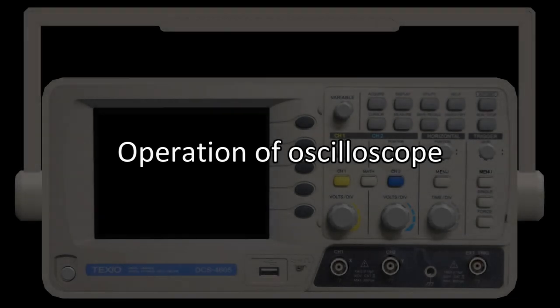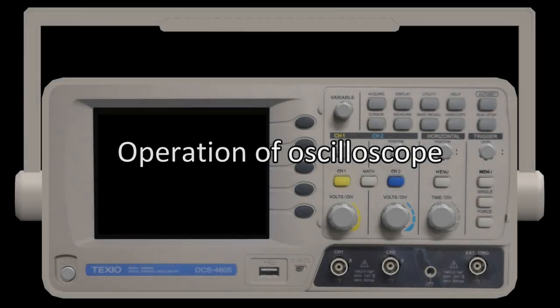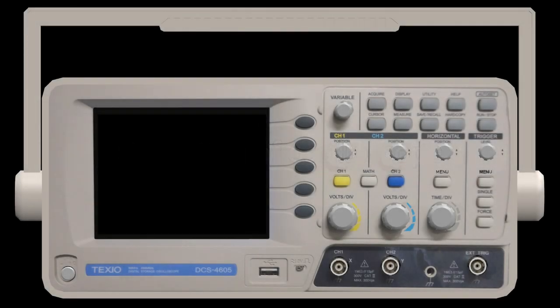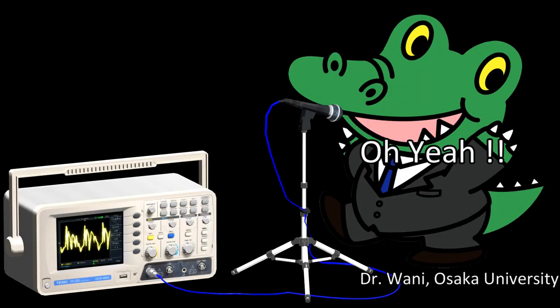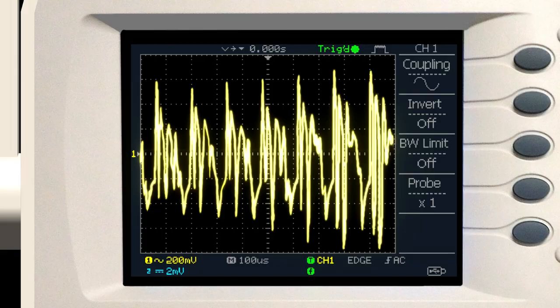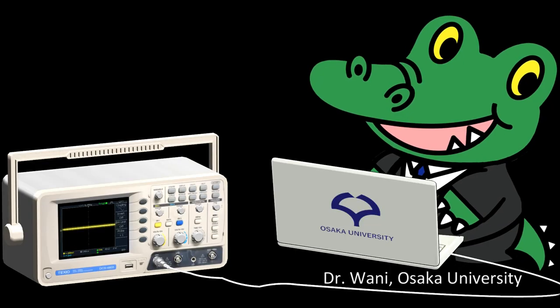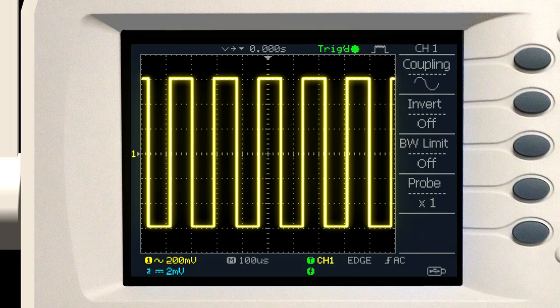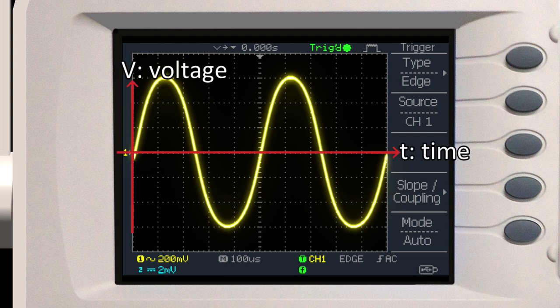Next, I will explain the operation of the oscilloscope. An oscilloscope is a device for displaying electrical signal waveforms on a screen. The horizontal axis shows time and the vertical axis shows voltage.